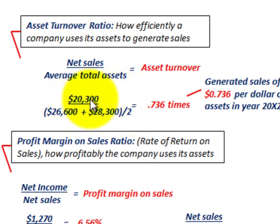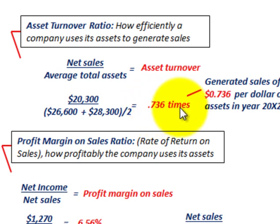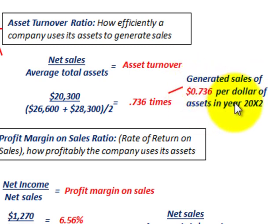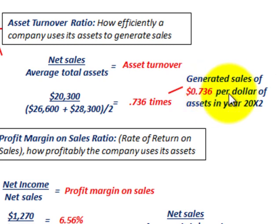Dividing the average total assets into our net sales gives us our asset turnover — in this case, 0.736 times. The interpretation is that it generates sales of $0.736 per dollar of assets being used in 20x2.